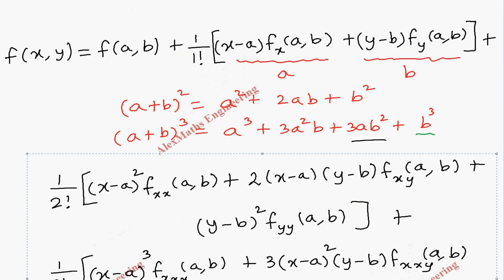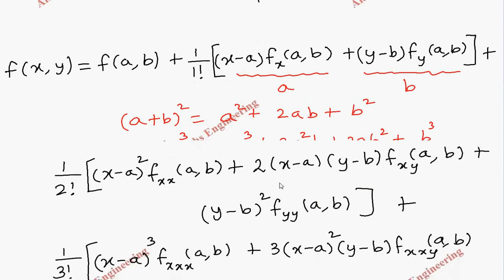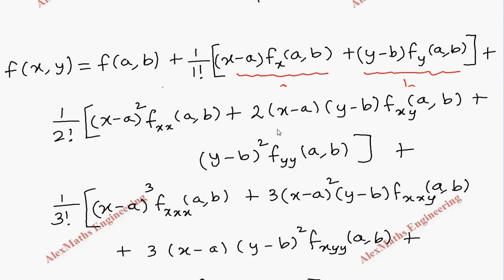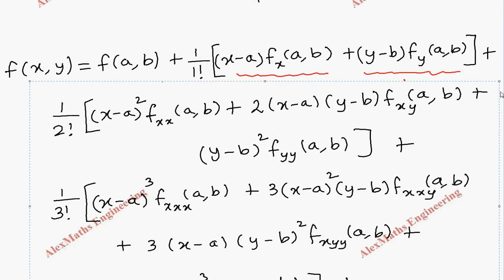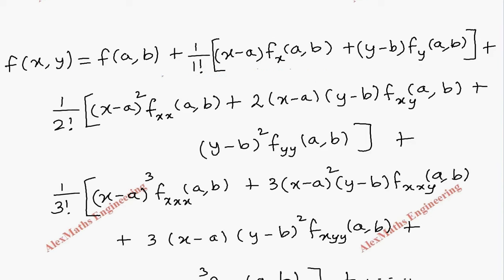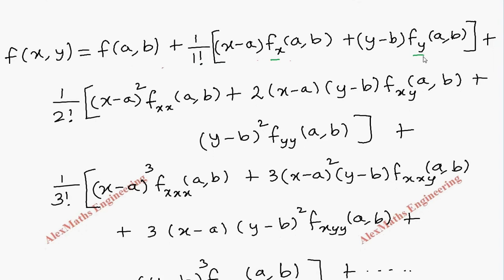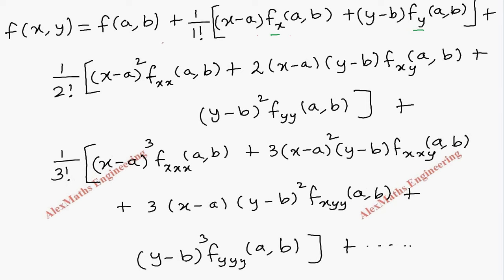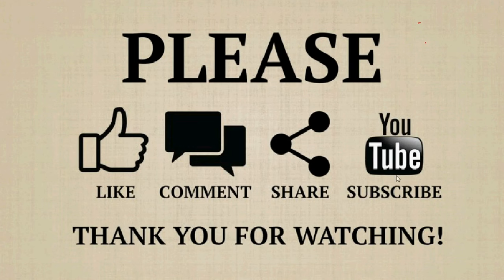So the series starts from f of a comma b, and then these terms continue. After writing this formula, whatever terms we need — first-order and second-order partial differentiations with respect to x and y — we have to find them separately and substitute into this formula. This gives the Taylor series expansion of a function of two variables.